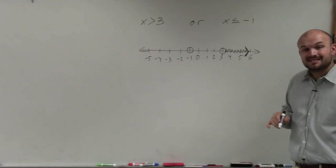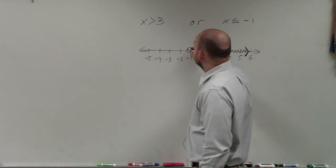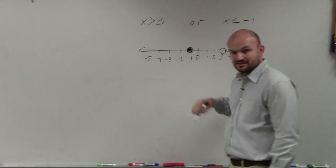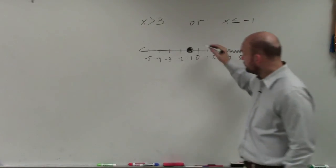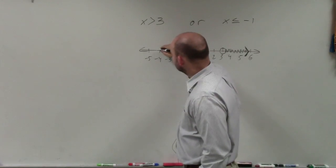If I have x is less than or equal to negative 1, we're going to shade that in, because it is included, right? It's less than or equal to. And that's going to be all values going to the left.